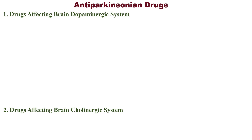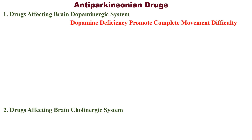Usually in Parkinson's disease there is a deficiency of dopamine that makes the person difficult to move. So with this information, remember this tricky sentence: 'Dopamine Deficiency Promote Complete Movement Difficulty.' Whenever you write the anti-parkinsonian drugs classification, this sentence should come to your mind.